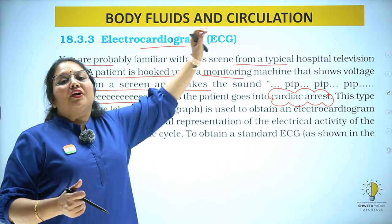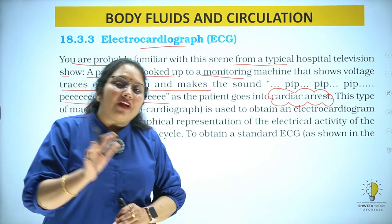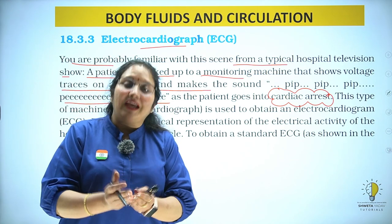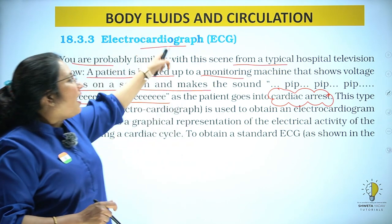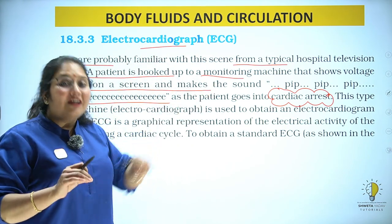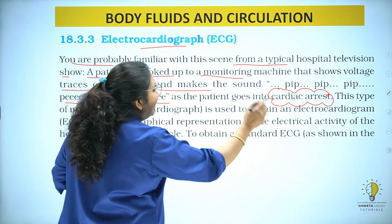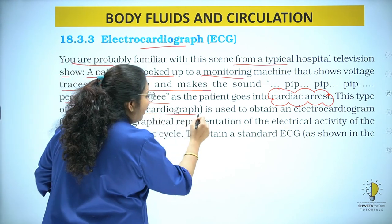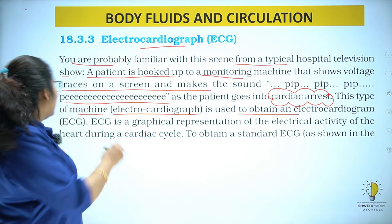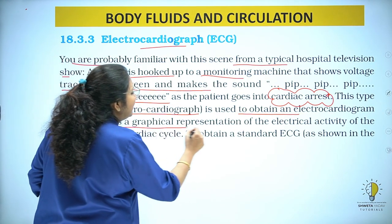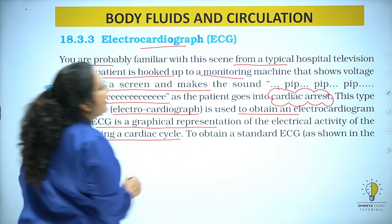Electrocardiograph is the machine. Electrocardiogram is the graphical representation that we read. ECG is a graphical representation of the electrical activity of the heart during the cardiac cycle.